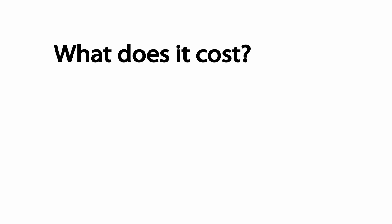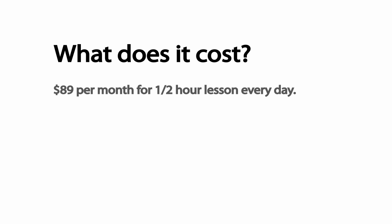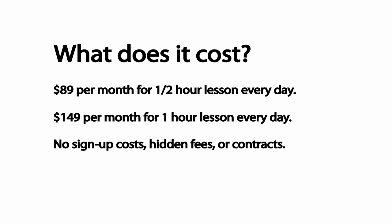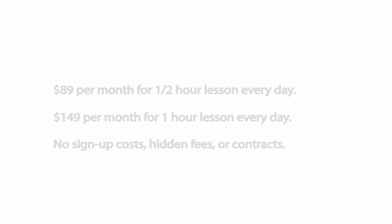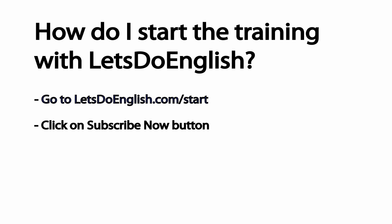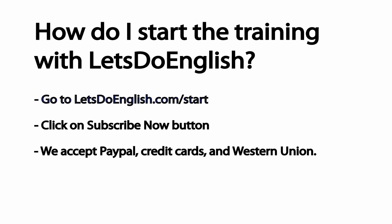What does it cost? The cost of the lessons is $89 per month for a half-hour lesson per day, and $149 per month for an hour lesson per day. There's no sign-up costs, hidden fees, or contracts. So how do you start the training with Let's Do English? You go to letsdoenglish.com/start. Click on the Subscribe Now button below. We accept PayPal, credit cards, and Western Union.